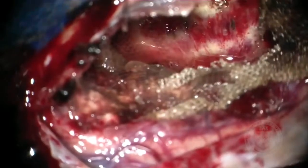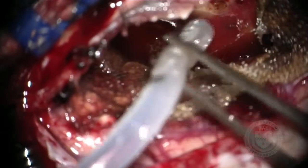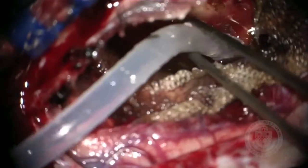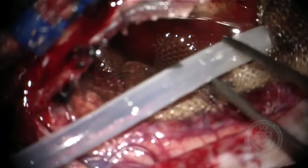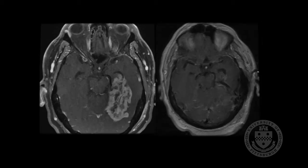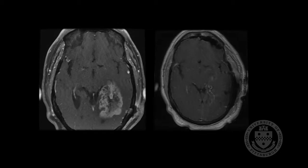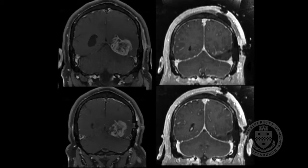At the end of the resection we can see the tentorium — this is a near total resection of this tumor. The ventricle is completely open, so we place a drain to prevent post-operative collection of blood inside the ventricles. Here you can see the post-operative view with a near total resection of this tumor, with good preservation of the surrounding normal brain.